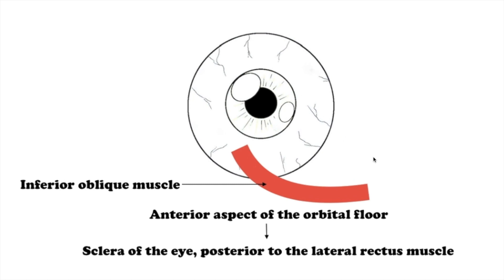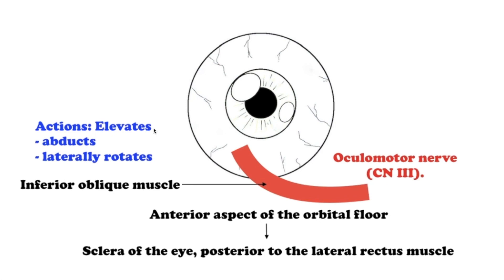Last but not least, the inferior oblique muscle. This muscle originates from the anterior aspect of the orbital floor and attaches to the sclera of the eye, posterior to the lateral rectus. This muscle elevates, abducts, and laterally rotates the eyeball. It is innervated by the oculomotor nerve.